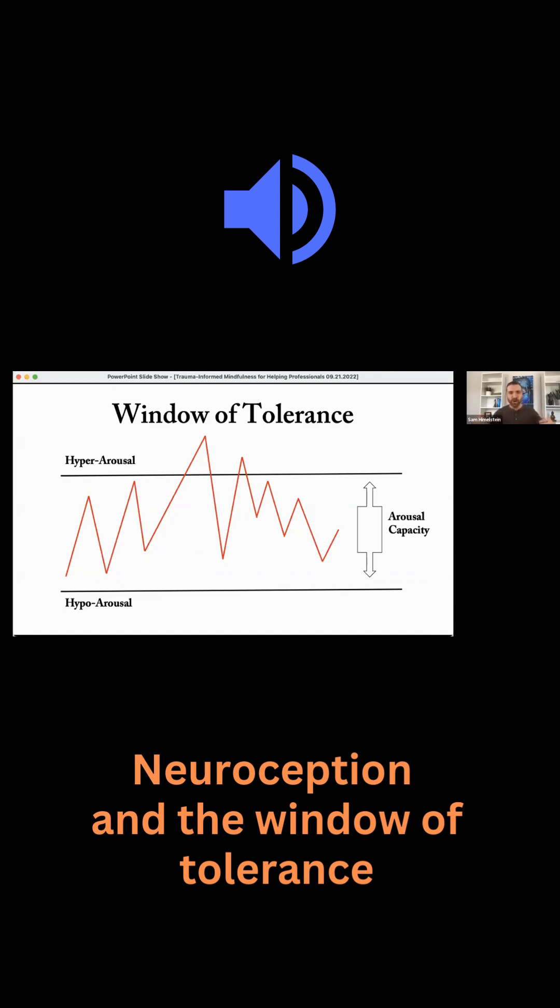That's an example of a neutral or non-threatening stimuli—the coiled up garden hose—being interpreted as something threatening, right, the snake from the prior experience.